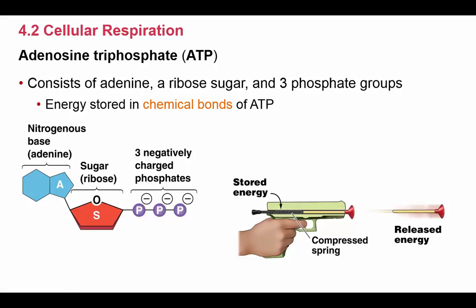It's kind of like a dart gun. First you push the dart in, compressing the spring — you're converting muscle energy into stored potential energy, waiting for you to pull the trigger. As you pull the trigger, energy is released causing the dart to fly. Similarly, as you break down the chemical bonds in the phosphates and remove a phosphate, energy is also released.